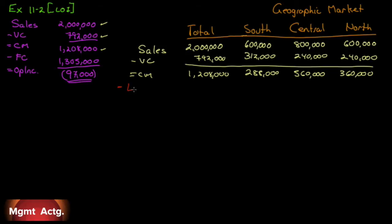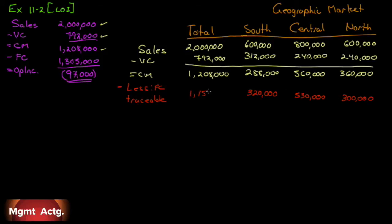Now we take off traceable fixed costs. In the north they total $300,000; in the central market $530,000; in the southern market $320,000. Adding these across gives $1,150,000 in traceable fixed costs. Total fixed costs are $1,305,000, so $155,000 is unaccounted for — we'll see that in common fixed costs. We're now in a position to calculate our segment margin.